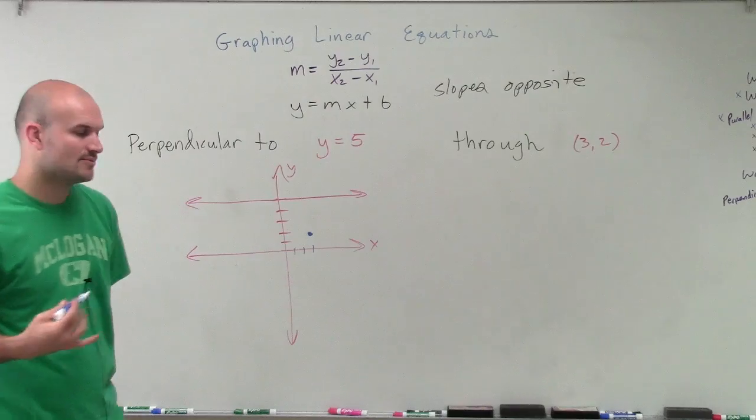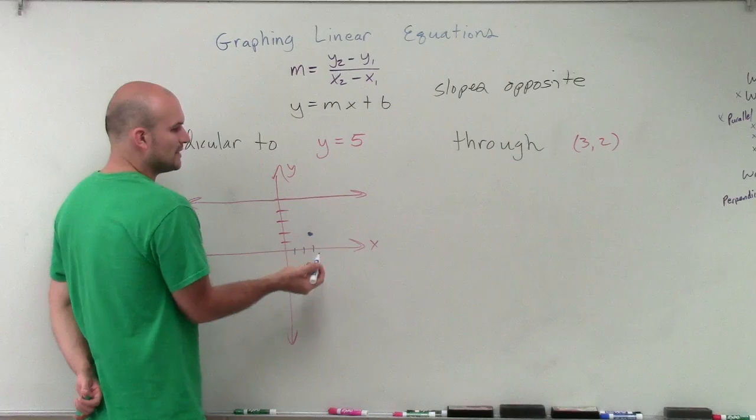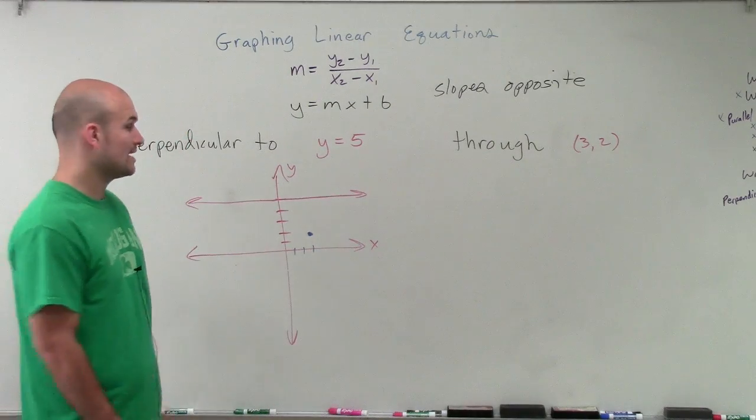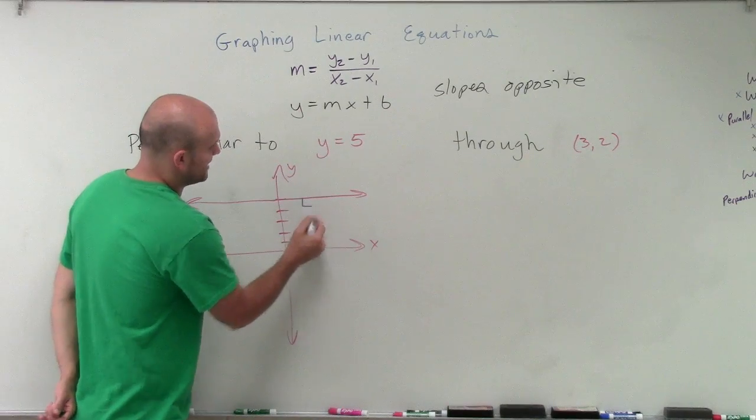Now, there's a couple things that we need to discuss when we're looking at a line that's going to be perpendicular. We know that perpendicular lines have opposite slopes. But then also, they cross at what we call a 90-degree angle.